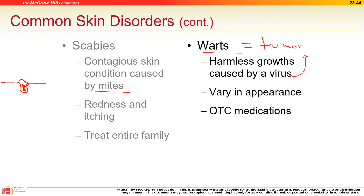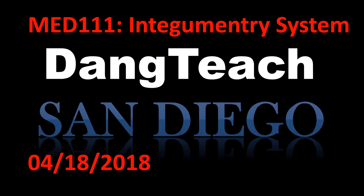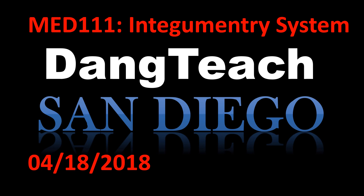HPV — human papillomavirus — attacks cells and disrupts DNA, causing tumors, which can lead to cancer. It causes papules that can develop into cervical cancer. This is why the Gardasil vaccine was developed and became so popular. That concludes the integumentary system — today's online learning covers modules 21 and 22.